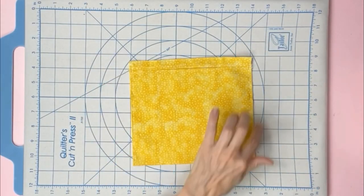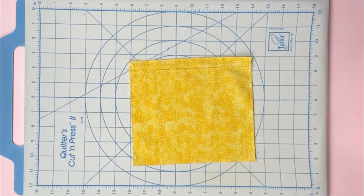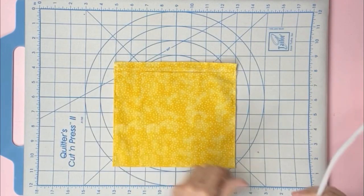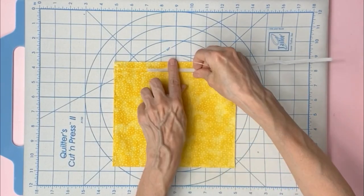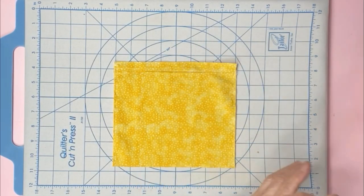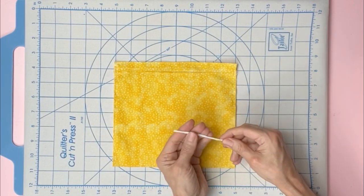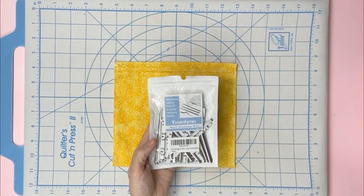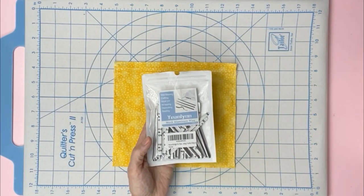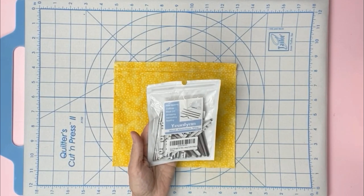After you complete the sewing, the next step is adding a nose bridge. A few ideas of items you could use is a pipe cleaner—cut it to the size you prefer. A twisty from the grocery store or any twisty you have at home. And the last, a nose bridge that I will be using. I purchased these on Amazon for $5.99 for a hundred of them. I'll list it down below in the description.